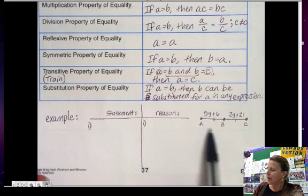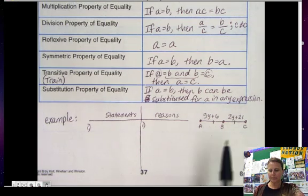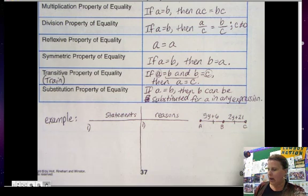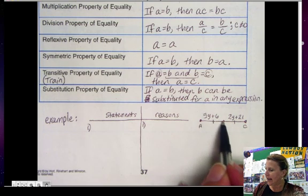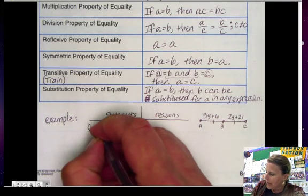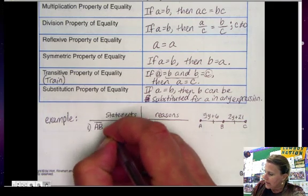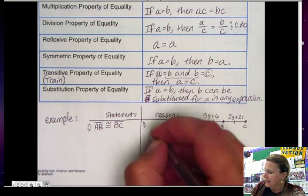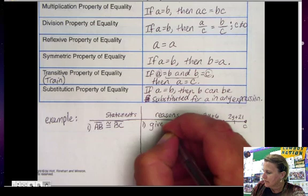So here's what we are given here. We are given that AB is congruent to BC. So AB is congruent to BC. That is given to us.